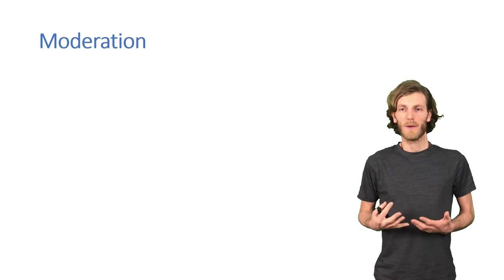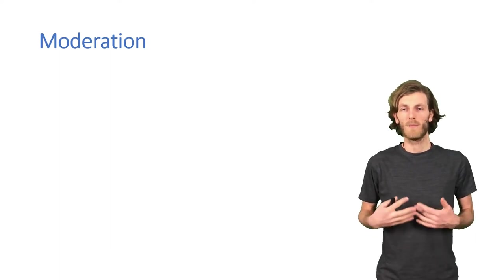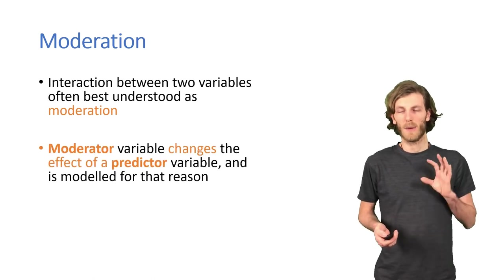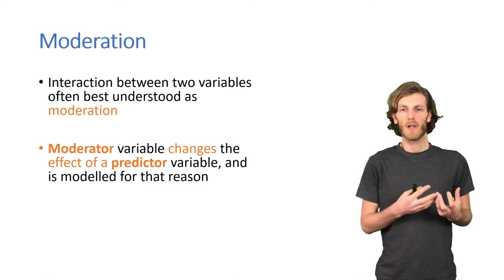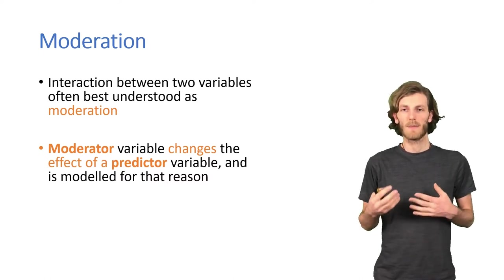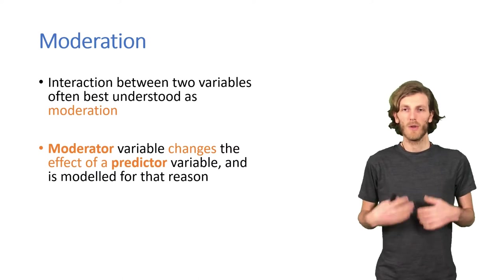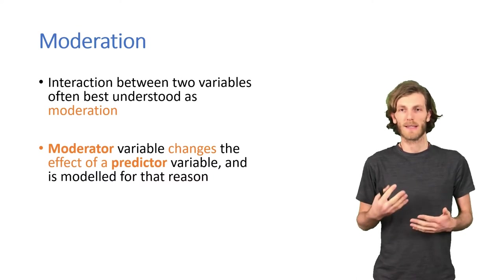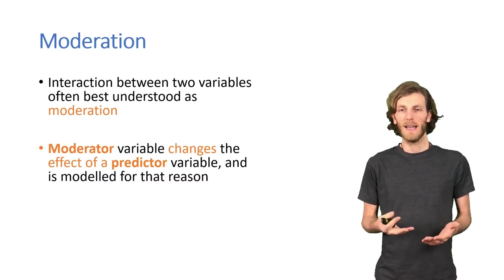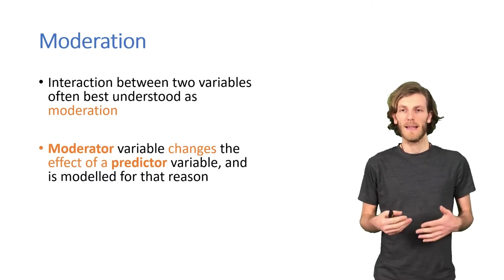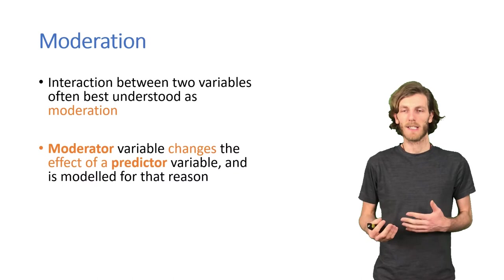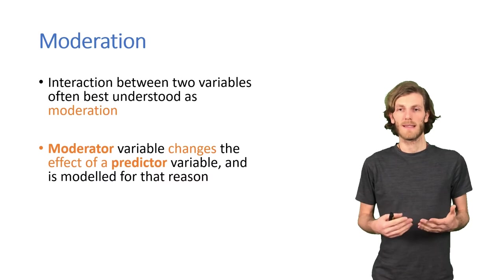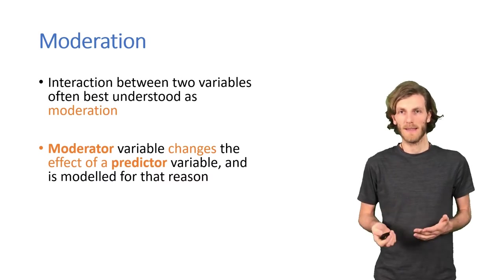A different, more specific way of talking about interactions is to talk about them in terms of moderation. And the idea of moderation is that we have one moderator and one predictor variable, and a moderator changes the effect of the predictor. And usually the reason for talking about it is because that's what our research question is about. So, here, quite clearly, our research question is not whether it's easier to remember real or fake chess positions. But the research question is about what influences the effect of player expertise.